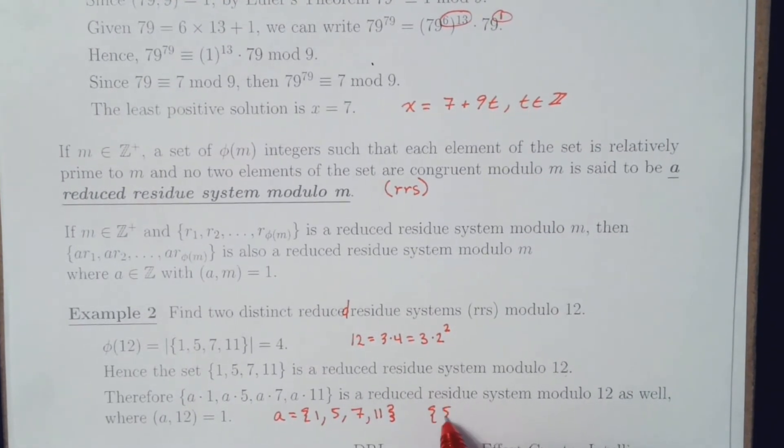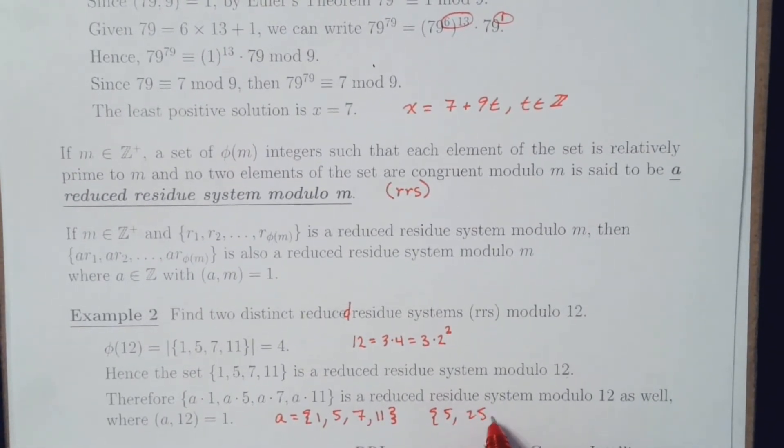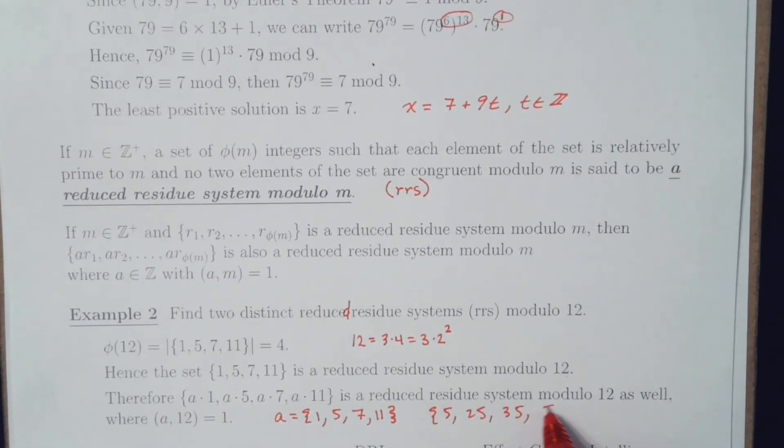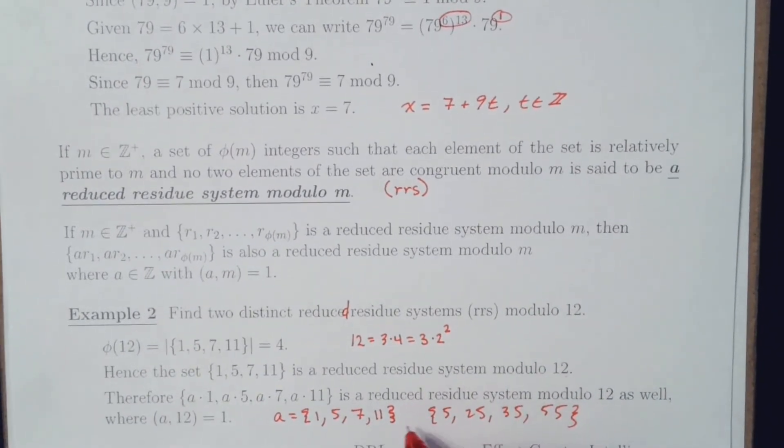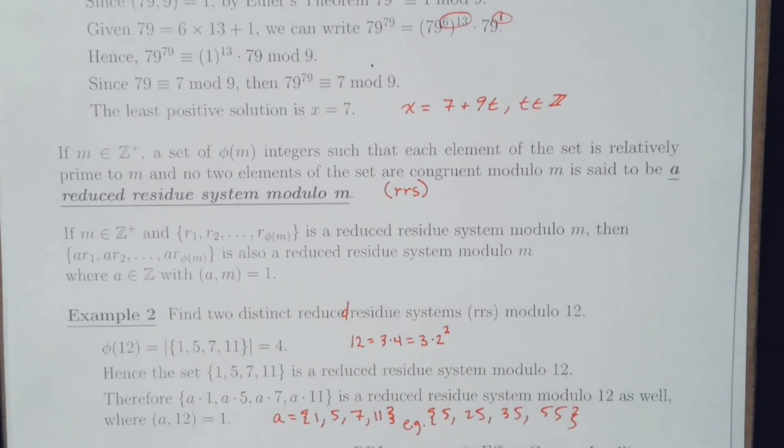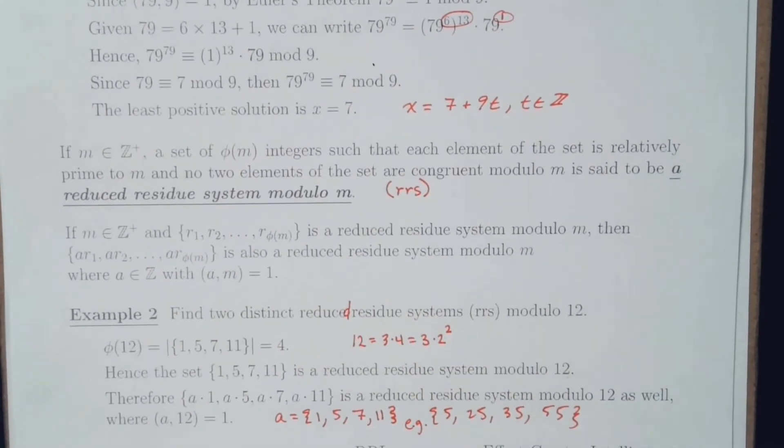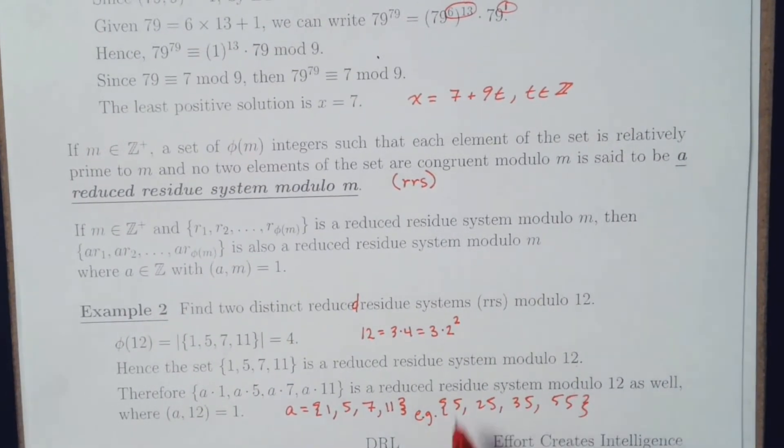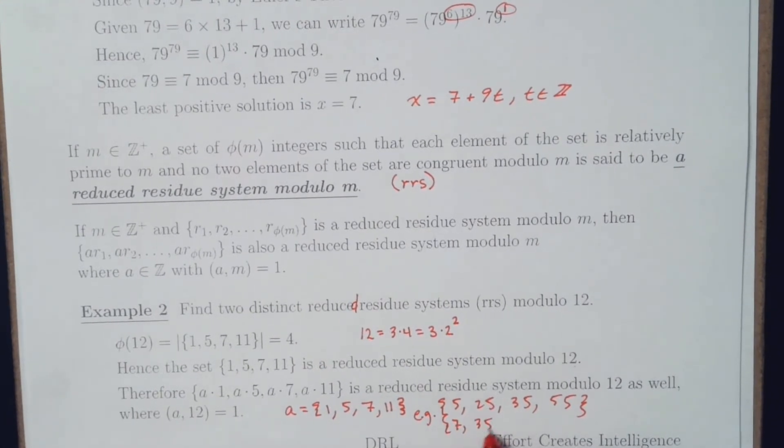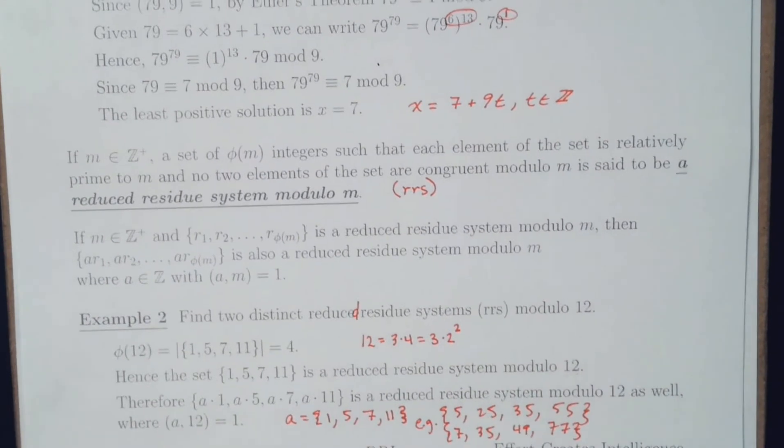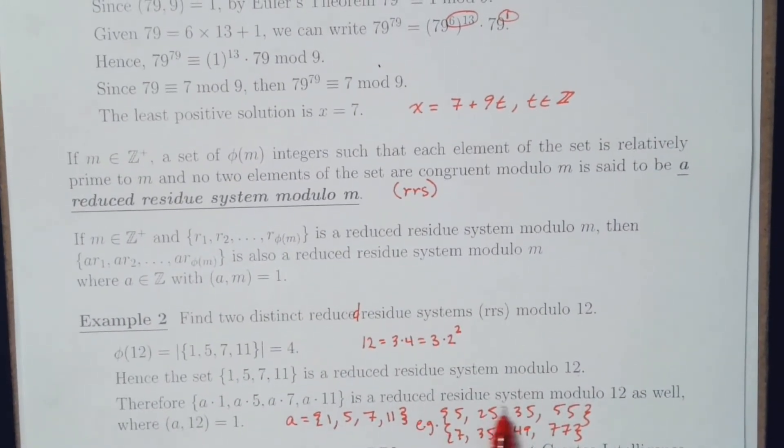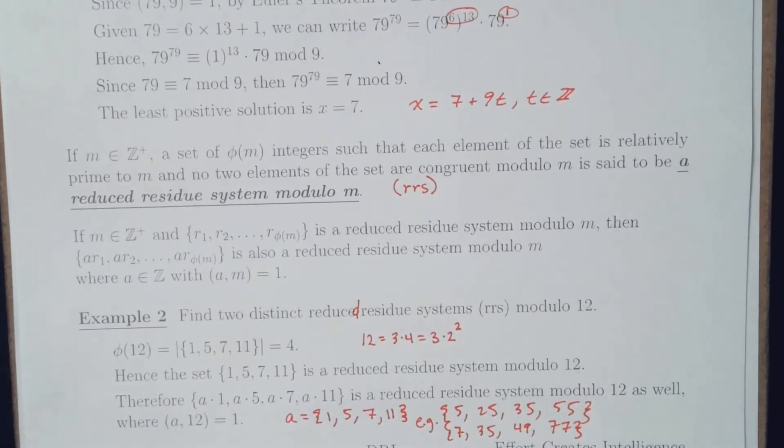So, I could have 5, 25, 35, 55 as a reduced residue system modulo 12. And I could also have 7, 35, 49, 77 as a reduced residue system modulo 12.